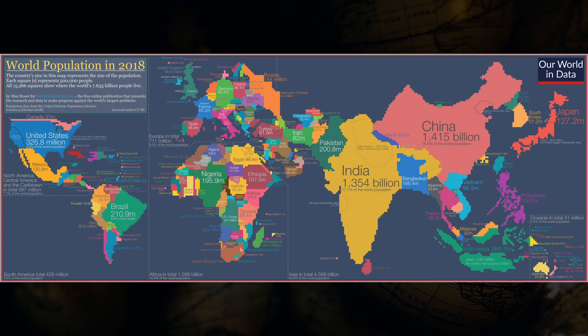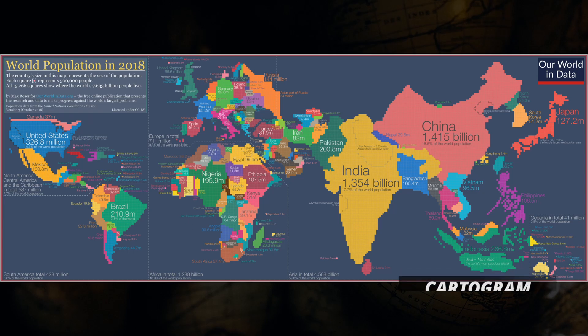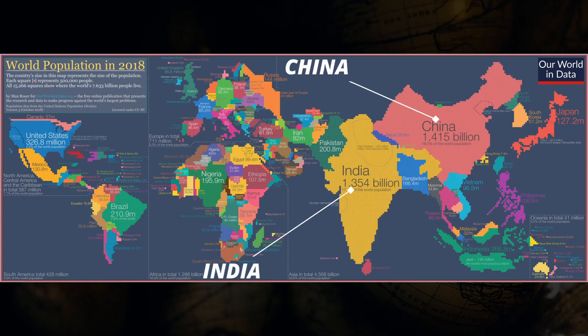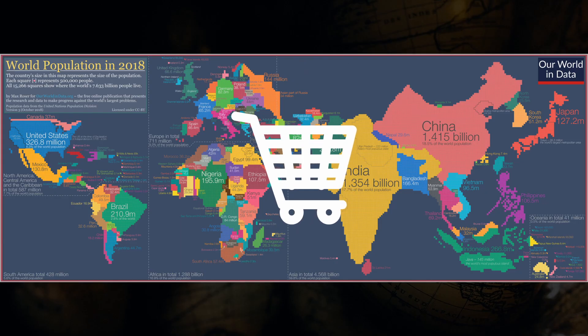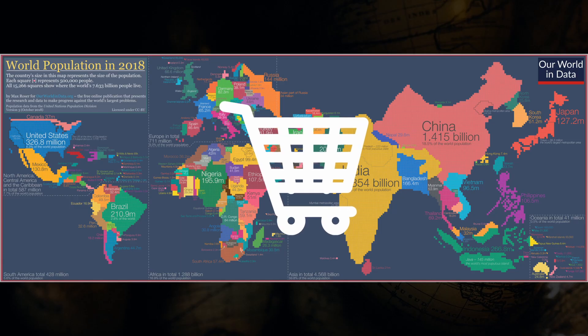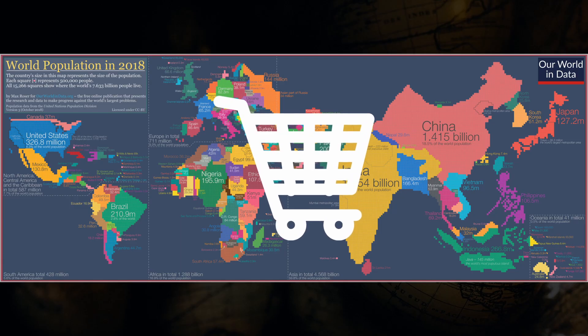Then you have the cartogram, which changes the size of the map or country based on the quantity of a number. This number can represent essentially anything depending on the theme — in this case, population. Take a look at China and India, the two most populated countries in the world, and look at how large they are on this map. To help you remember, think of a cart that keeps getting bigger and bigger as you fill in more quantities of goods.